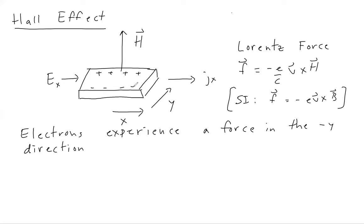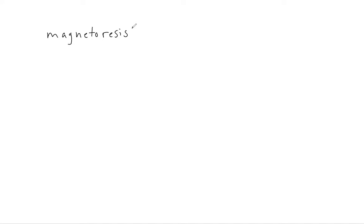Let's compute what happens in this scenario within the Drude model. We're going to compute two specific things. The first is the magnetoresistance, call it rho, which we might expect to be a function of magnetic field H. We define this as the ratio of the electric field in the x-direction divided by the current density in the x-direction. We'll compute how this ratio depends on magnetic field — and in general we might expect that it does depend on magnetic field.